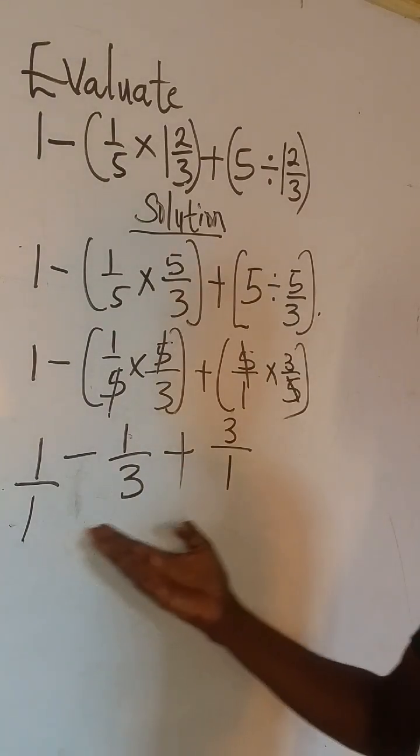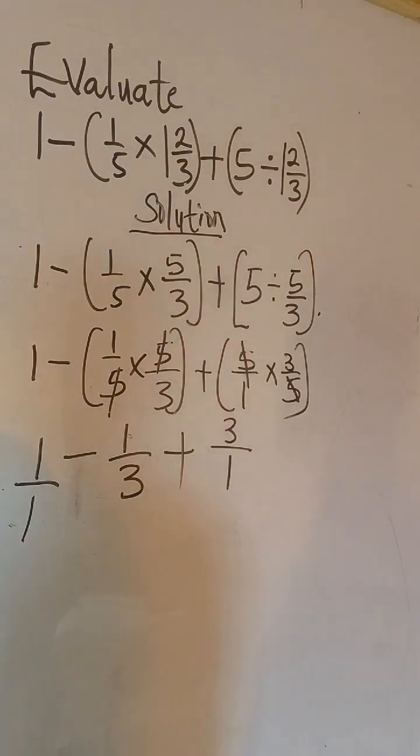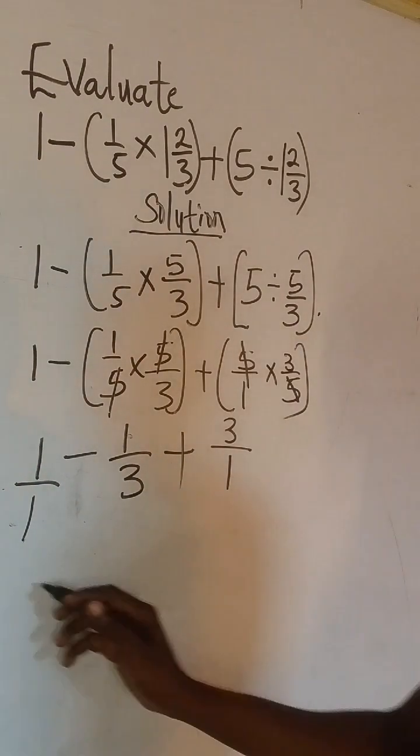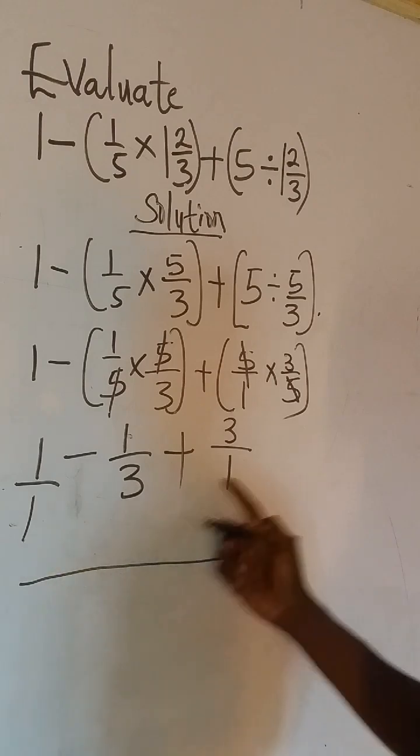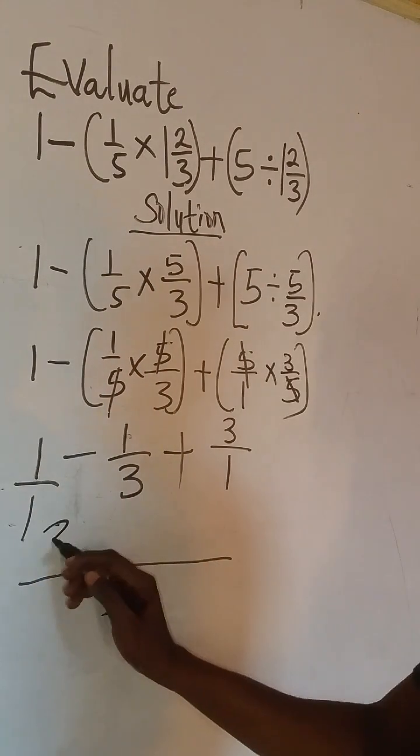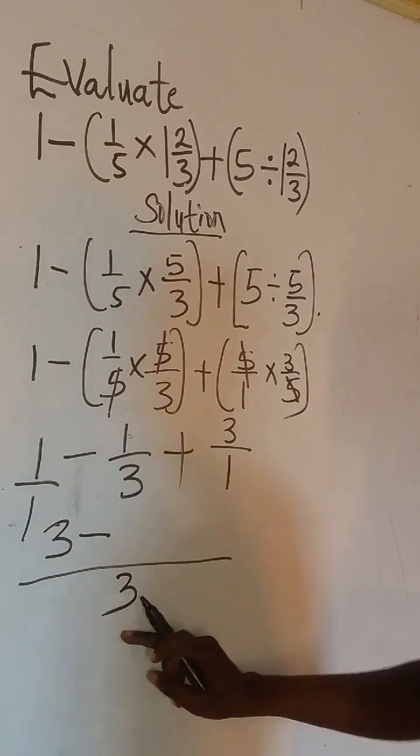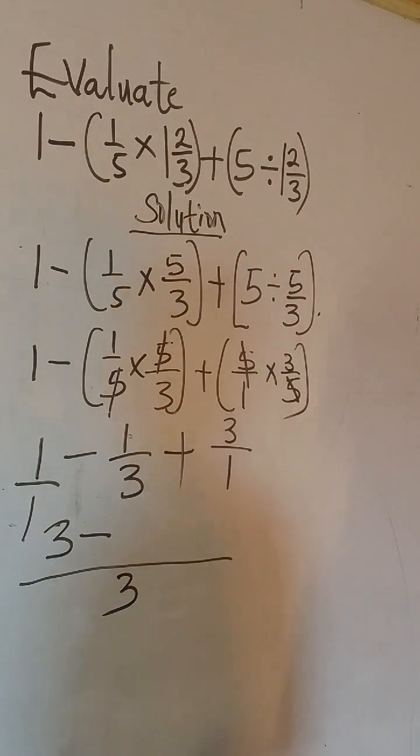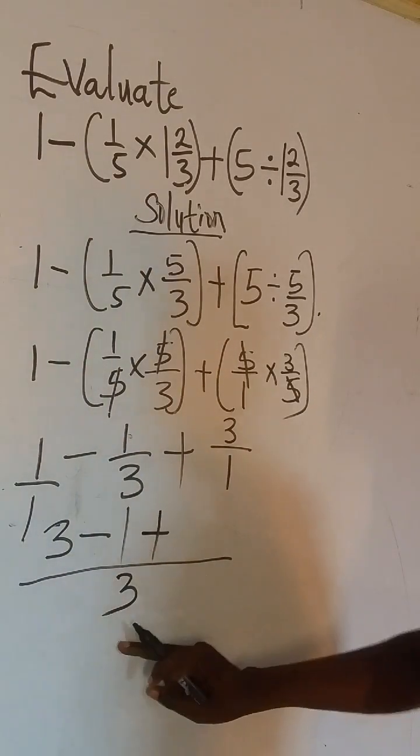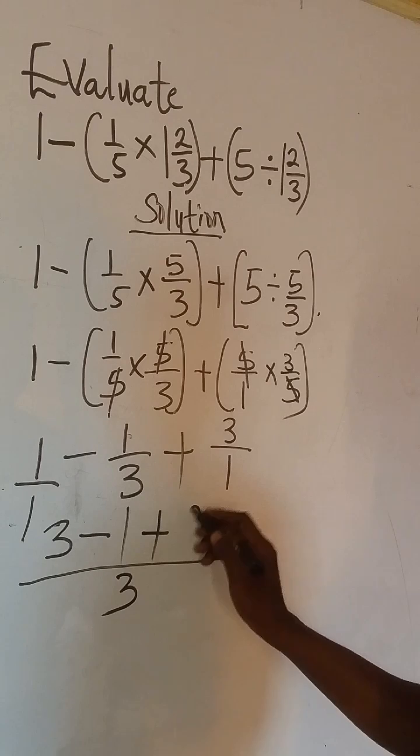So remember when two or more fractions are separated by either plus or minus what we do is to find the LCM. So what is the LCM of 1, 3 and 1? That is 3. 1 in 3 is 3. 3 times 1 will give us 3. Minus 3 in 3 is 1. 1 times 1 is 1. Plus 1 in 3 is 3. 3 times 3 here is 9.